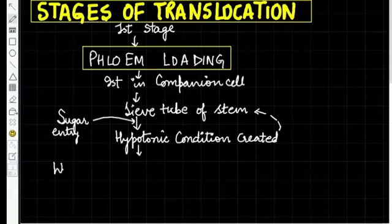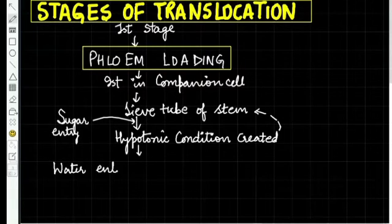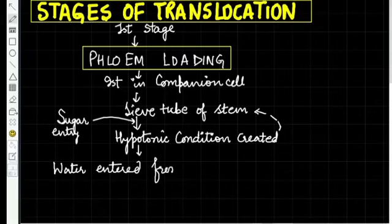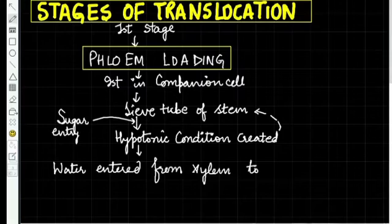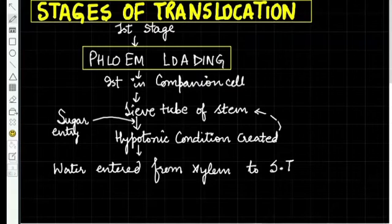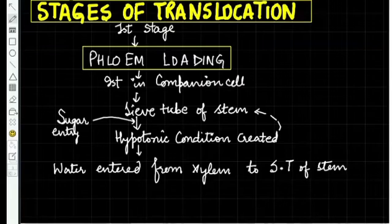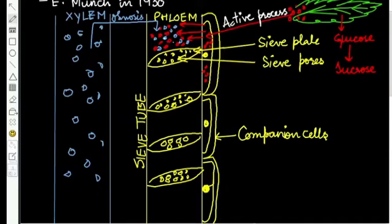Water entered from xylem to sieve tube of stem. Now, as we see in the diagram, water has entered this top sieve tube. The beneath sieve tube has low water molecules, and further next one also has no water. The top cell has high hydrostatic pressure, and the lower cell has low hydrostatic pressure.